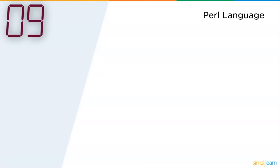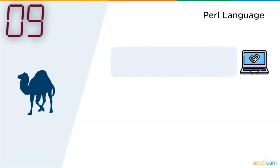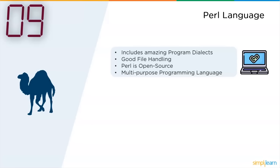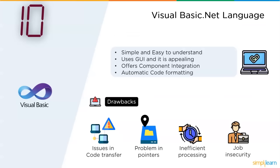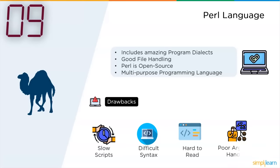The advantages PERL offered: it includes amazing program dialects, good file handling properties, it is open source, and it is a multi-purpose programming language. The drawbacks: PERL had slow scripts, difficult syntax, it was really hard to read, and it had poor argument handling. Yet it had some decent demand in the industry.